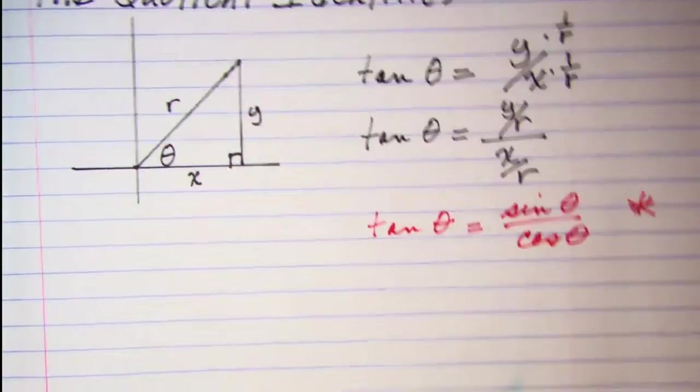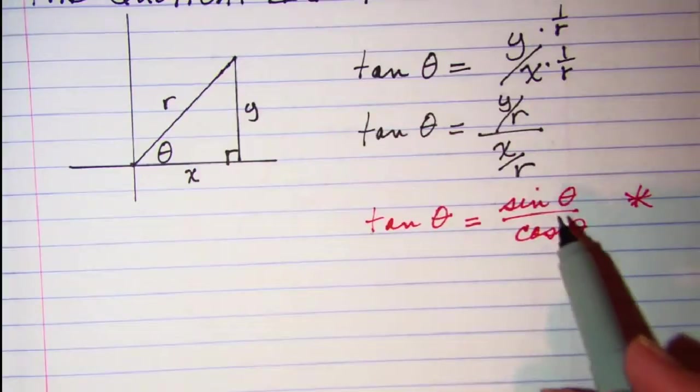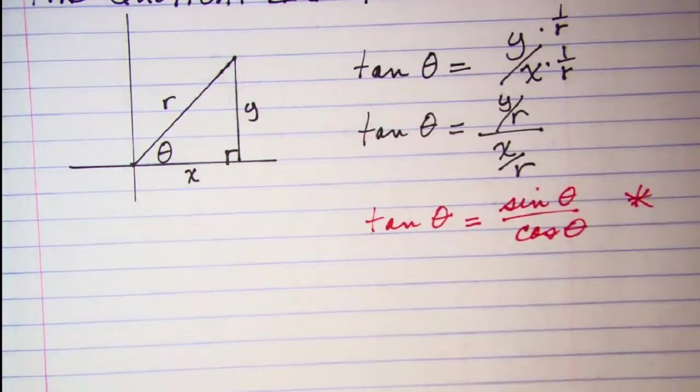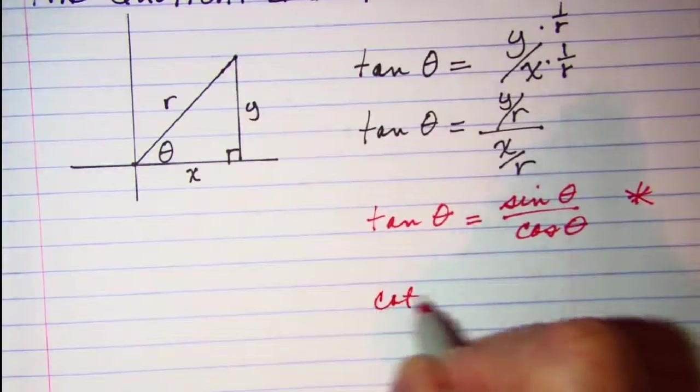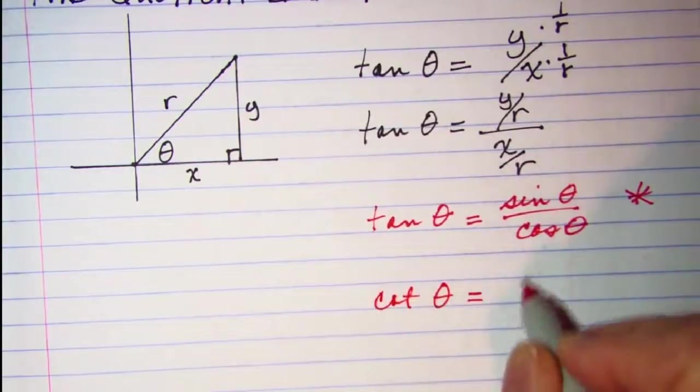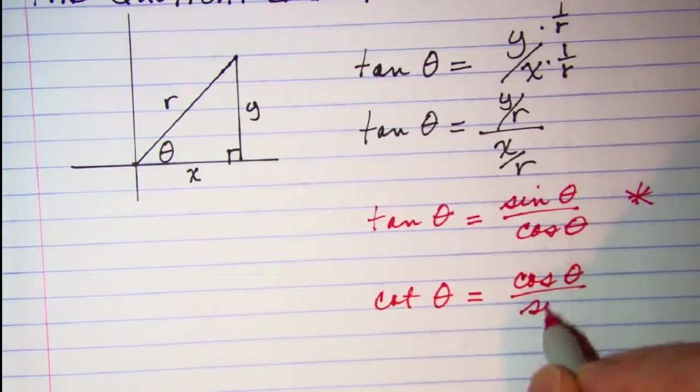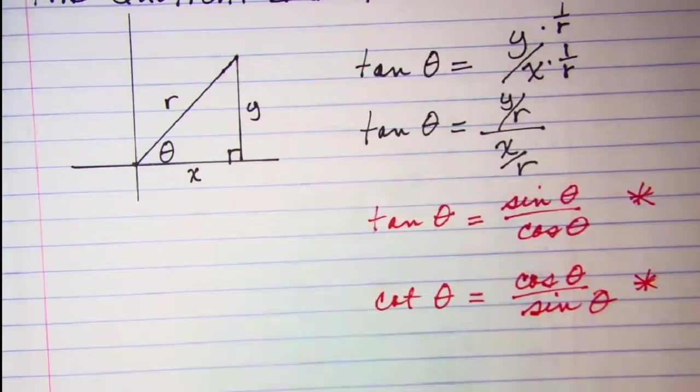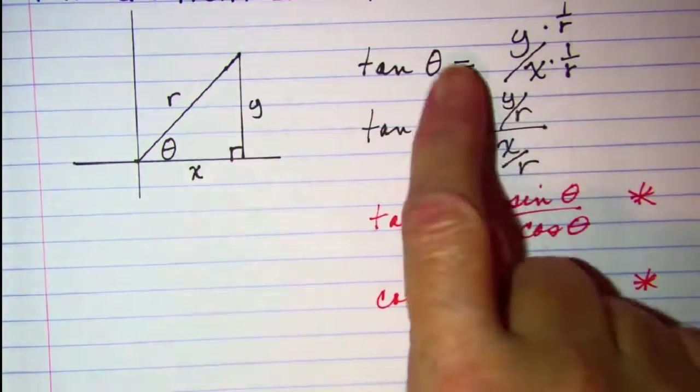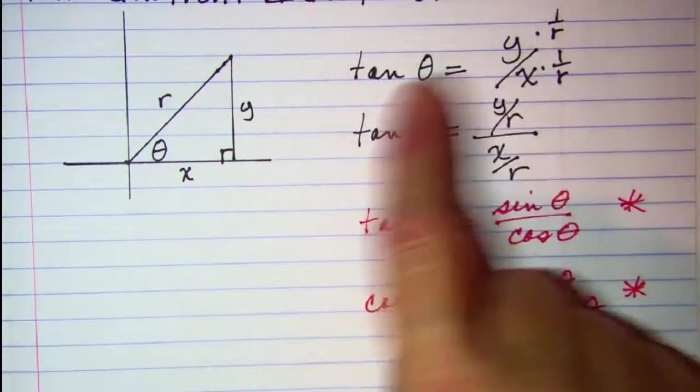Now my cotangent is the reciprocal of tangent, so I could just flip this over and write cotangent theta is equal to cosine theta over sine theta. I could also develop it using x over y and doing the same thing.